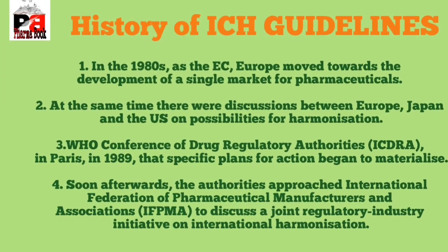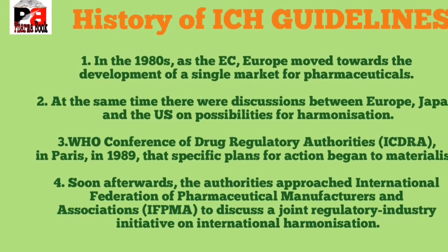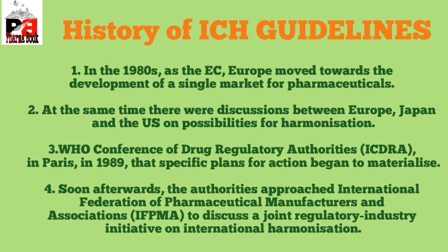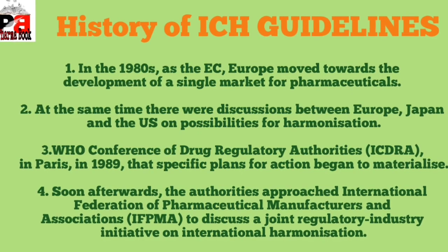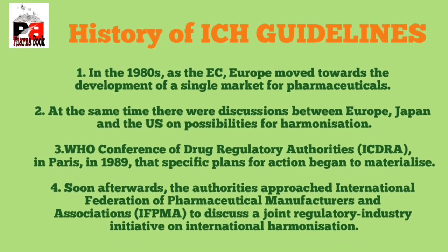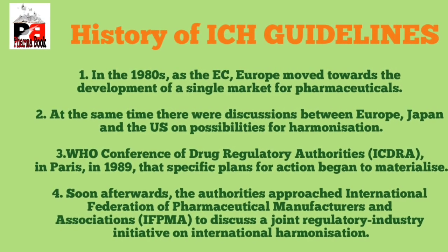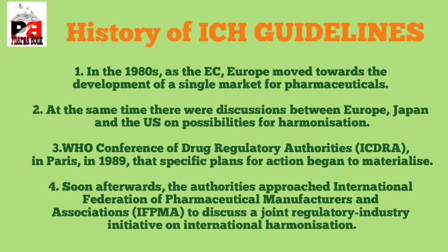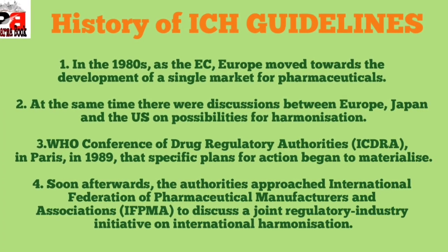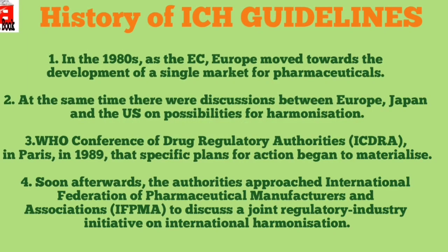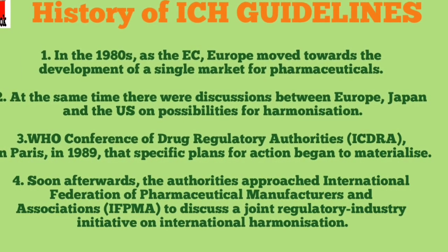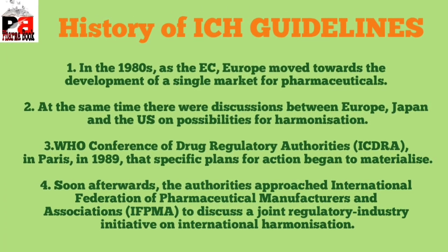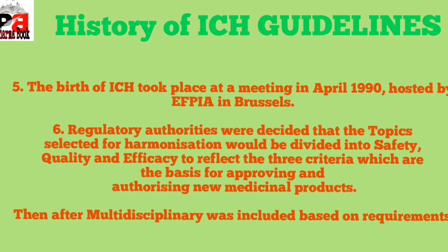Let's see the history of ICH guidelines. In 1980, the European Commission decided to develop a single market for pharmaceuticals. At that time there were discussions between Europe, Japan, and the US about the possibilities of harmonization. In 1989, after a WHO conference with drug regulatory authorities, an action plan started to materialize. The drug regulatory authorities were then approached at the International Federation of Pharmaceutical Manufacturers and Associations to discuss a joint regulatory-industry initiative on international harmonization.